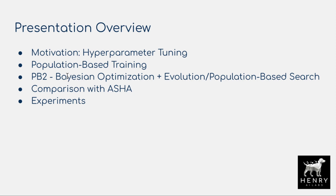PB2 combines the evolutionary search with a Bayesian controller, where the Bayesian controller chooses how to mutate the top K percent of agents in the population. They also discuss how to parallelize this with the Gaussian process kernel and regret bounds, which I've omitted from the video because I don't completely understand them — but if anyone wants to explain in the comments, I'd be happy to discuss. Then there's a comparison with ASHA, the asynchronous distributed hyperparameter search algorithm.